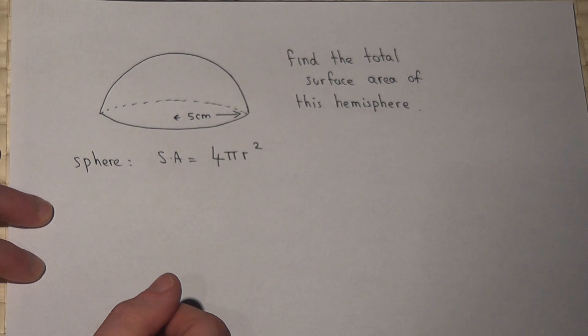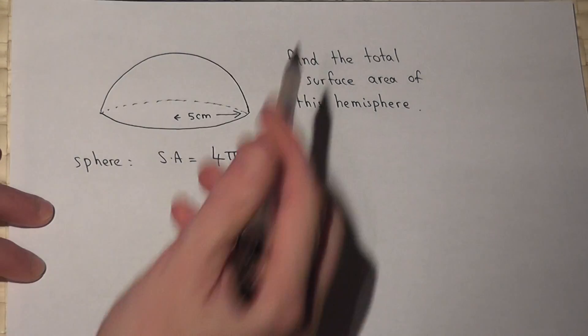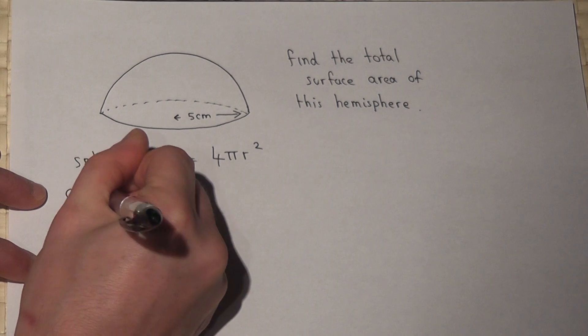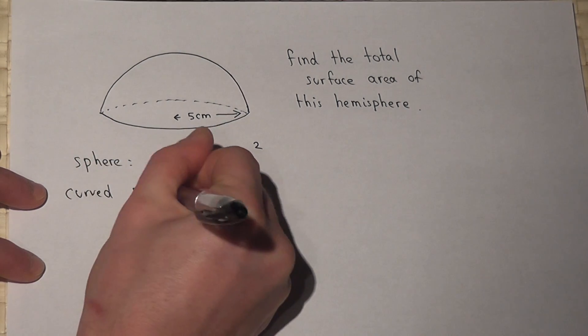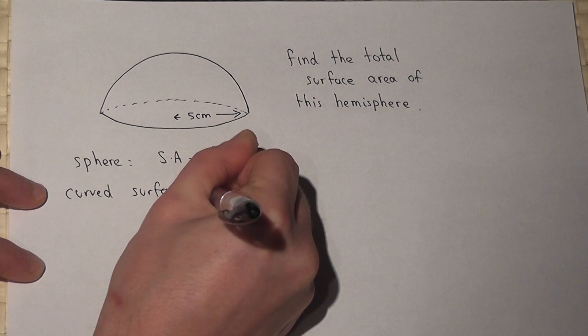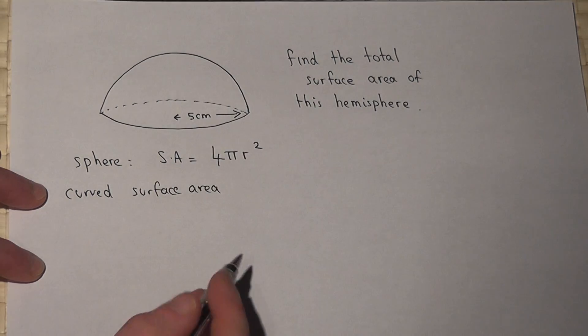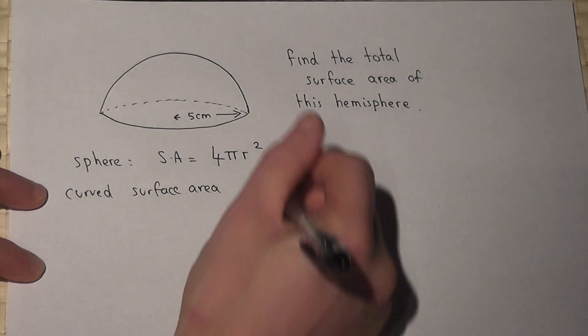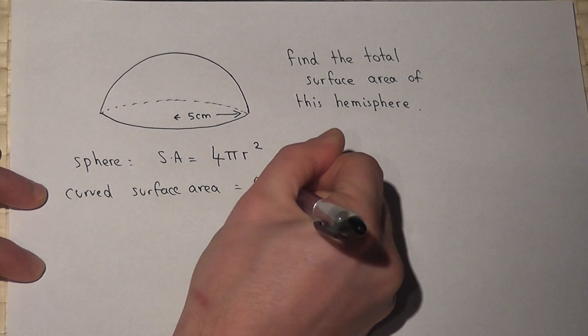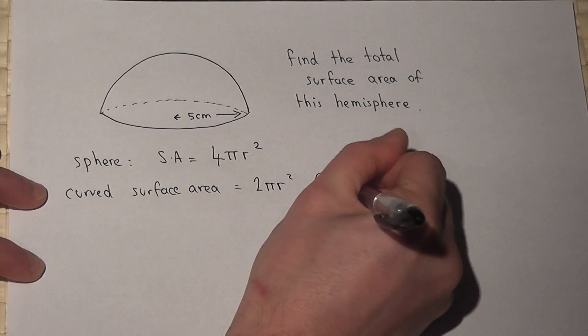Now, if we have a hemisphere, then the curved surface area of the hemisphere must be a half of this. So rather than 4 pi r squared, it must be 2 pi r squared, and that's of the hemisphere.